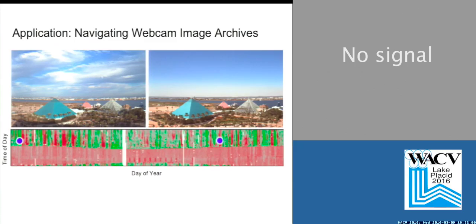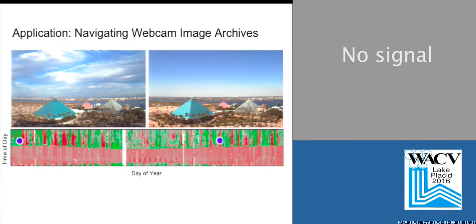We looked at a couple of different applications. The core method is really simple, so the paper is really a collection of applications — things that we could do with this on this dataset. One of the things that we did was build an interface that creates a semantic summary of a year's worth of images. Here you can see wherever the value is green was a cloudy day and wherever it's red was a not cloudy day, so you can quickly browse through this dataset and find an image in a particular set of conditions.